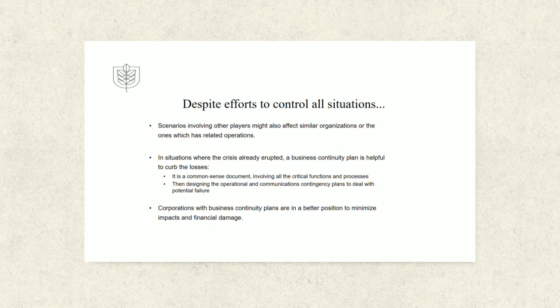The most effective crisis management occurs when potential crises are detected and dealt with quickly, before they can harm the organization's business. In those instances, they never come to the attention of key stakeholders or the general public. Despite efforts to control all situations, scenarios involving other players might also affect similar organizations or those with related operations. In situations where a crisis has already erupted, a business continuity plan is helpful to curb the losses — it is a common-sense document involving all the critical functions and processes of the business, designing operation and communication contingency plans to deal with plan failure and how key stakeholders will react when they find out about it.